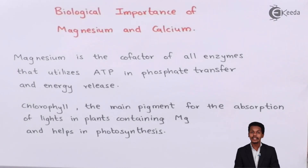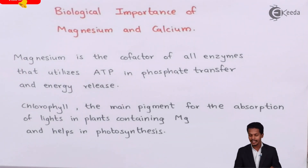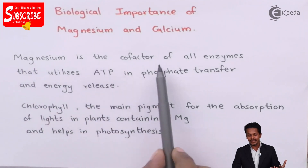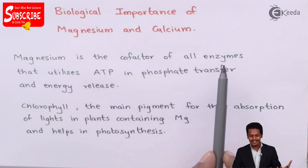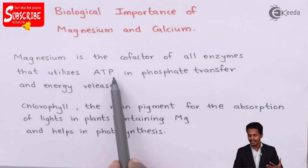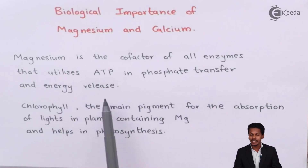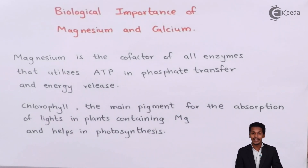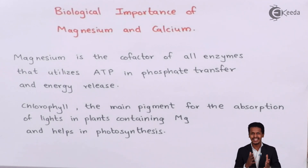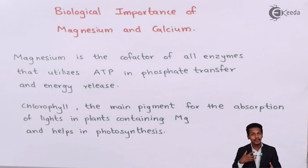Talking about the importance of calcium and magnesium in our body, let us discuss magnesium first. Magnesium is the cofactor of all the enzymes that utilize ATP in phosphate transfer as well as in energy release. So magnesium plays a very vital role in phosphate transfer, and ATP present in our body liberates energy.